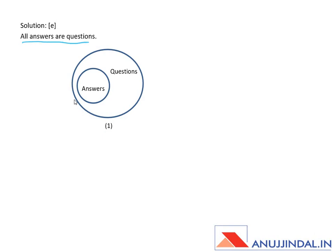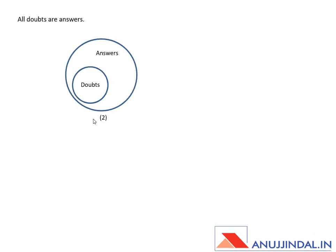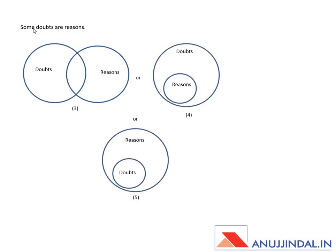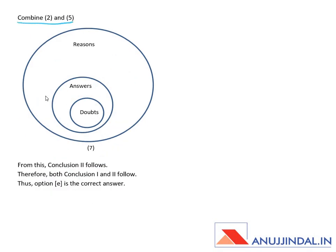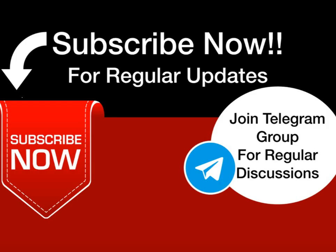You can also see the Venn diagrams in a clearer manner. Statement one — all answers are questions — gave us Venn diagram one. Statement two — all doubts are answers — gave us Venn diagram two. Statement three — some doubts are reasons — gave us three possible Venn diagrams: three, four, and five. Combining diagrams one, two, and four gave us the diagram where reasons are inside doubts, doubts inside answers, answers inside questions — from which conclusion one follows. Combining diagrams two and five gave the diagram from which conclusion two follows. Since both conclusions follow, the answer is option E.